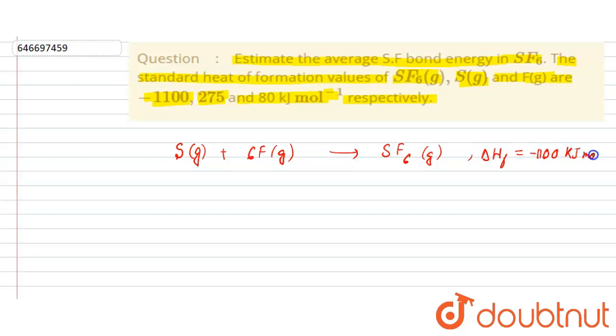Then we are given, from S solid if we convert it to S gaseous, the enthalpy ΔH is equal to +275 kilojoule per mole. And we are given, if we convert half F₂ gaseous to F...